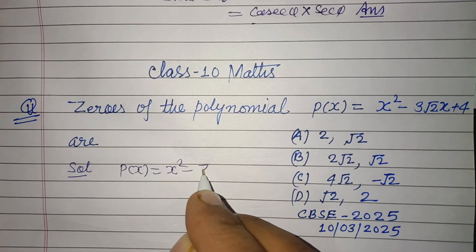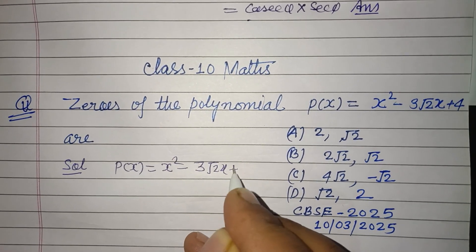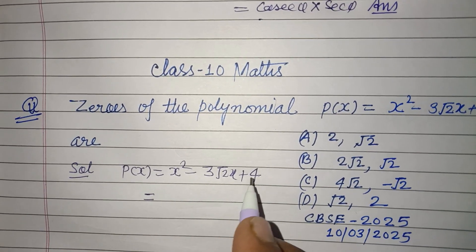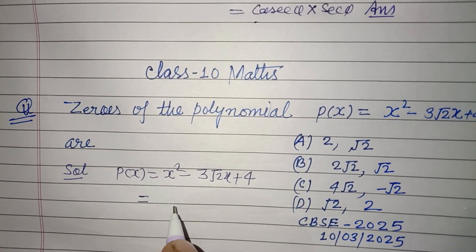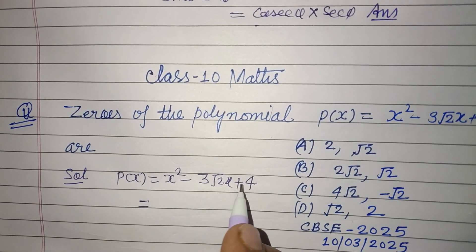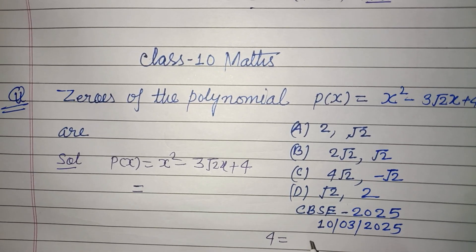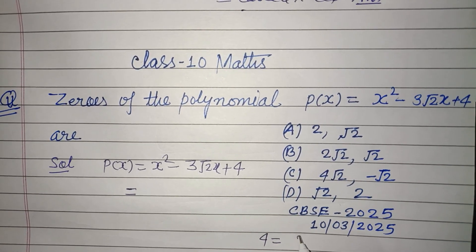First we factorize it. So 4 can be written as 2 × 2.